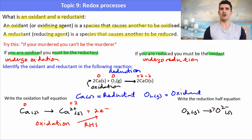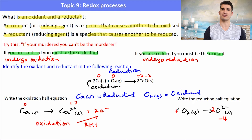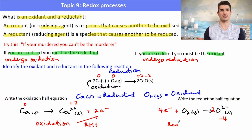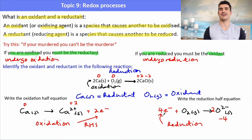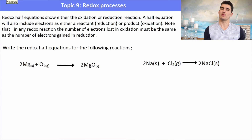For the oxygen half equation, we balance oxygens by placing a 2 in front of O²⁻, giving a total charge of −4 on the right. We then add 4 electrons to the left-hand side (the more positive side), giving the reduction half reaction: O₂ + 4e⁻ → 2O²⁻.